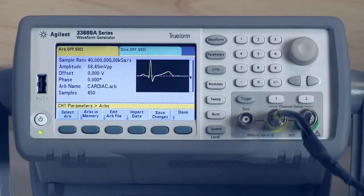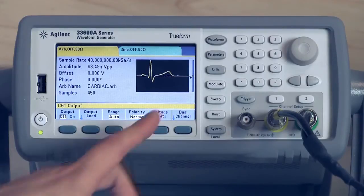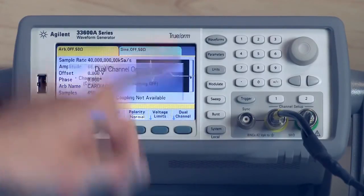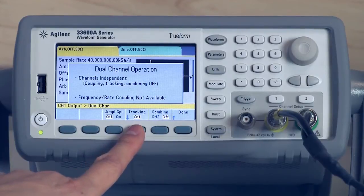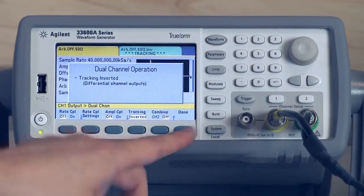So in order to do the differential portion, all you have to do is press channel 1 and go to this dual channel button. And here we have this tracking button, so I'm going to press that and turn on inverted. And press done.